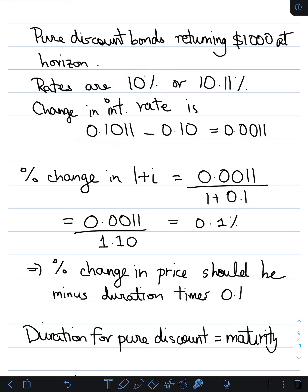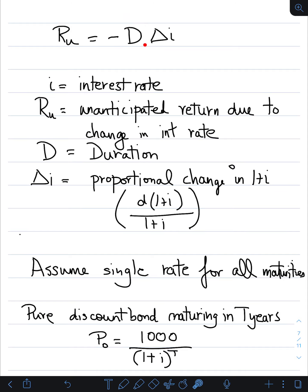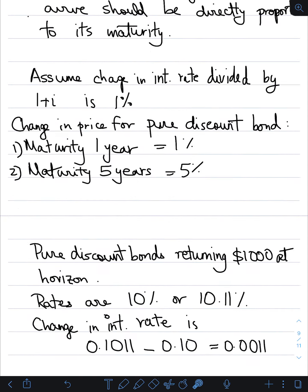The change in interest rate is 10.11% minus 10%, which is 0.0011. To find the percentage change, we use (new minus old) over old. So we have 0.0011 divided by one plus 0.10, which is 1.10, and that turns out to be 0.1%. We can then conclude the percentage change in price should be minus duration times 0.1%.